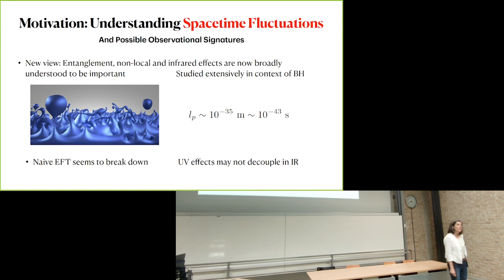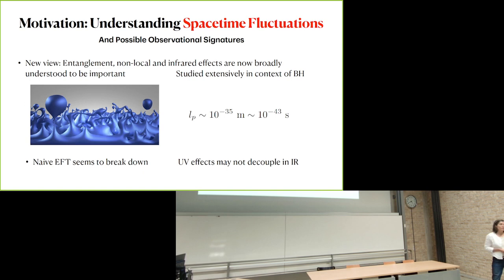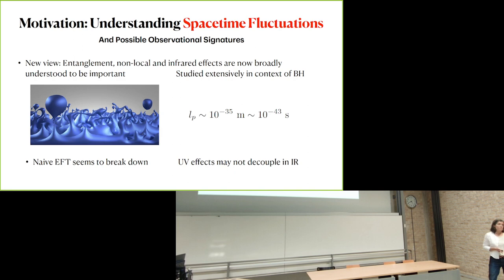However, we also know there have been puzzles that we've really struggled to resolve within the context of local effective field theory when applied to gravity. The context in which this is most sharp is the black hole information problem. As we heard this morning from Jan, it is generally understood that the resolution to the black hole information problem lies in non-locality, where the naive effective field theory seems to break down and UV effects may not, in fact, decouple in the infrared.